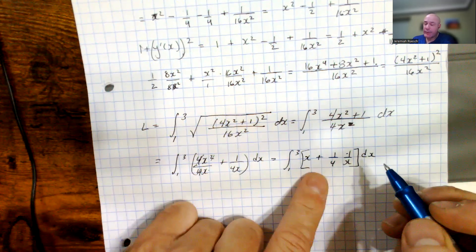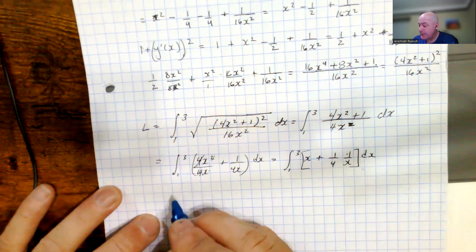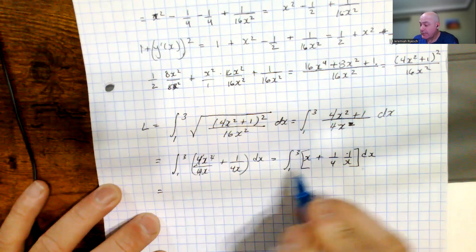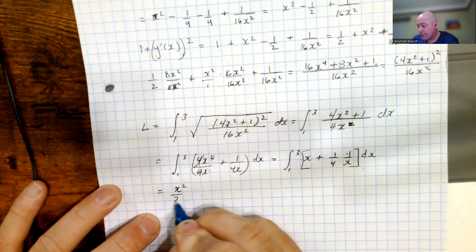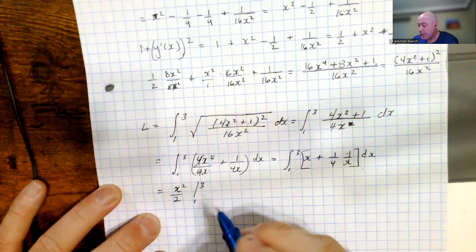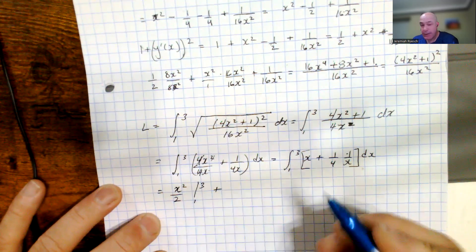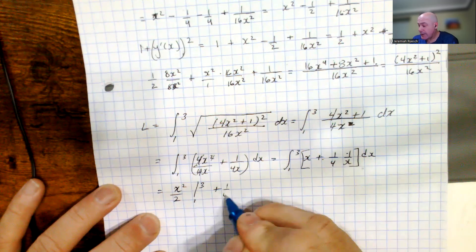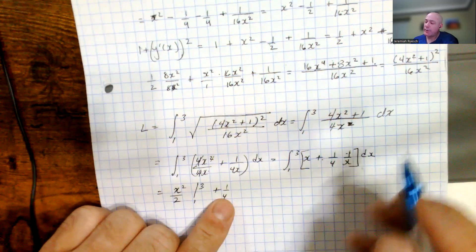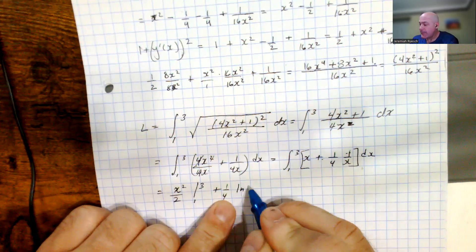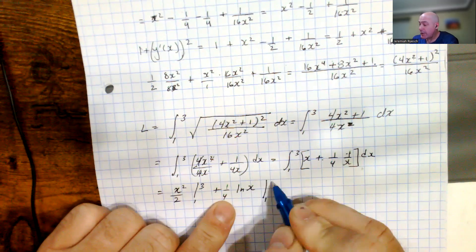So now I can integrate each of these terms since the integral of the linear operator. So the integral of x is x squared divided by 2, divided by 1 to 3, and then I have, adding on to that, the 1 fourth term which is constantly factored out. This is the integral of 1 over x, which we saw earlier, was the natural log of x, evaluated from 1 to 3.